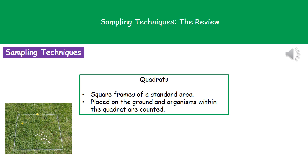The first sampling technique is the quadrat, which you've probably used in school. It's a square frame with a set area — typically a half-meter square. Using a random number generator, we generate positions, place the quadrat on the ground, and count the organisms within it. This gives a total count within a given area, which we can multiply up to the total field area to estimate how many of each plant are present without counting every single organism.